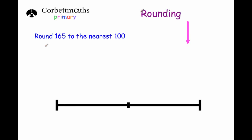Welcome to this CorbMav's primary video on rounding numbers to the nearest 100. Our first question asks us to round 165 to the nearest hundred. Let's consider the multiples of 100 that are below and above 165. The multiple of 100 below 165 is 100, the multiple above 165 is 200, and the number midway between 100 and 200 is 150.